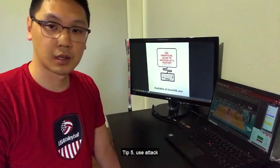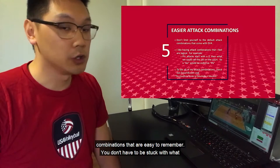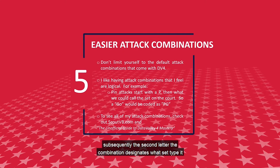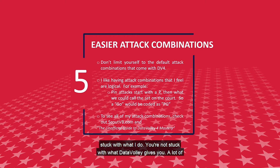Tip 5: use attack combinations that are easy to remember. You don't have to be stuck with what Data Volley gives you when you first start out. For example, I like to do for all my pin attacks is start my attack combination with the letter P, and the second letter of the combination designates what set type it is. So if it's a go, it's a PG. Feel free to come up with your own — you're not stuck with what I do or what Data Volley gives you. A lot of people use a lot of different attack combinations.